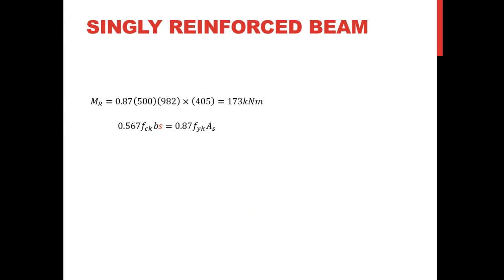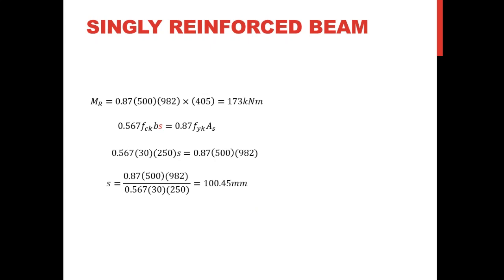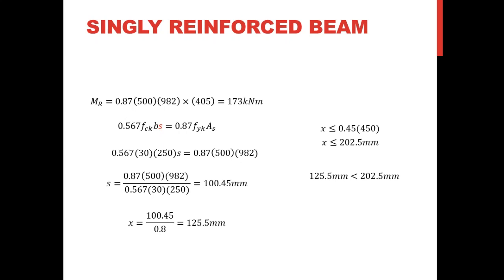Finally, we check whether the section has a ductile mode of failure. Using the equilibrium equation with the actual steel area, we now have only one unknown, s. Substituting the values gives s, and then the neutral axis depth x = s / 0.8 = 125.5 mm. The limit for our section is 202.5 mm, and since 125.5 mm < 202.5 mm, the section will have a ductile mode of failure.